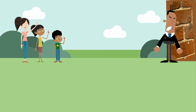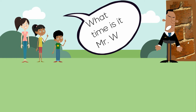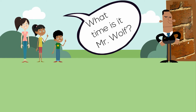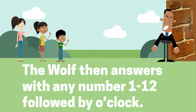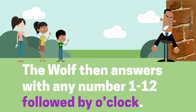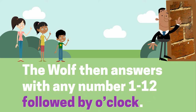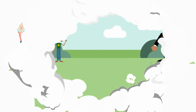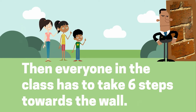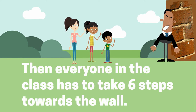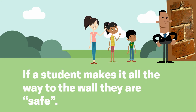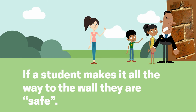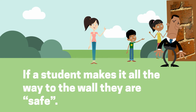Have your whole class use the target question at the same time: 'What time is it Mr. Wolf?' Then the wolf can answer with any number from 1 to 12. If the wolf says it's 6 o'clock then everyone has to take six steps towards the wall. If the wolf says it's 3 o'clock then everyone has to take three steps towards the wall. If a student makes it all the way to the wall then they are safe and Mr. Wolf can't catch them.